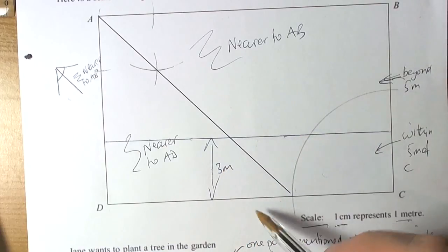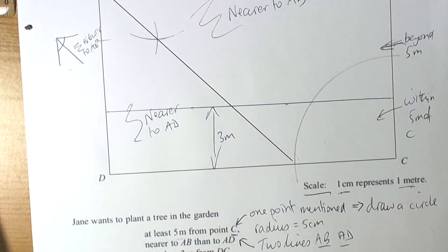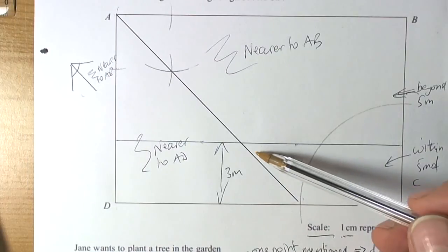This is our three centimetre line. Anything in here is three metres. Now, the question says that we've got to be less than three metres. So that means we've got to be down here somewhere.